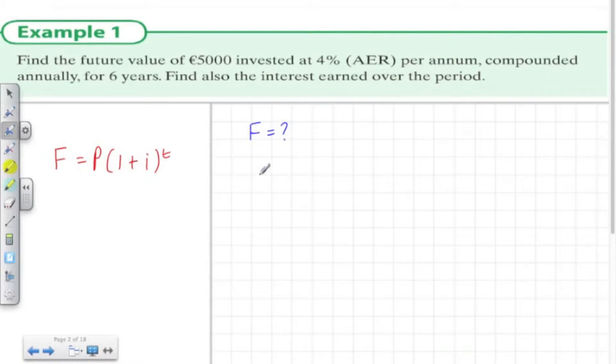So what is the future value? Well we know that the present value from the question is five thousand euro. The interest rate is at four percent so then one plus i is equal to one point zero four, and the number of time units is six years or six units.